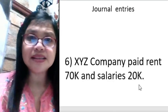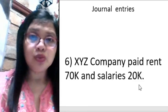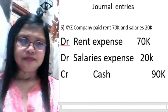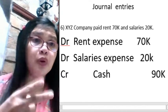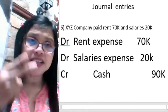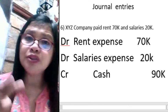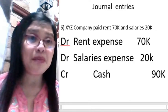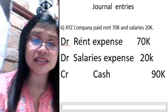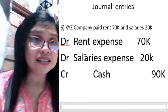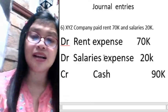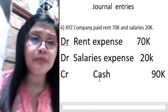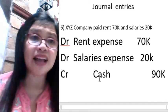XYZ paid rent 70,000 and salaries 20,000. Rent and salaries are both expenses, and expenses have a normal debit balance. So we debit rent expense 70,000 and debit salary expense 20,000. We credit cash 90,000 because we have given out that total amount of cash.